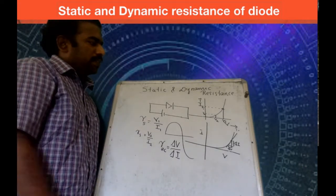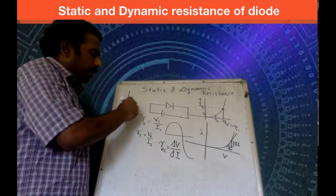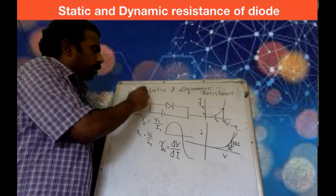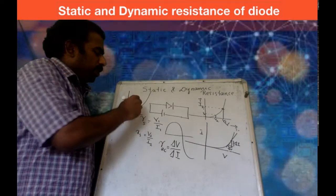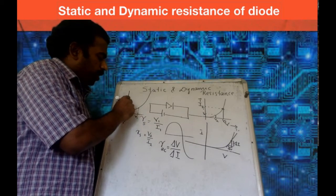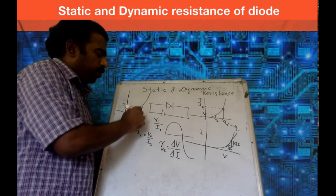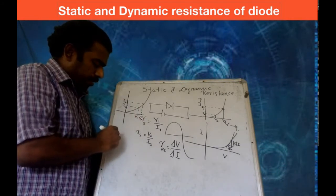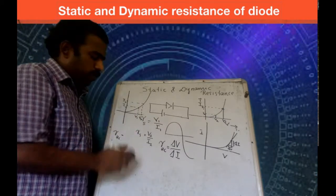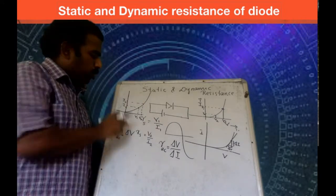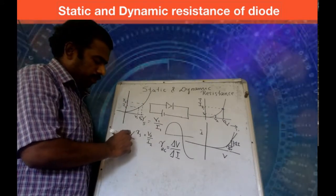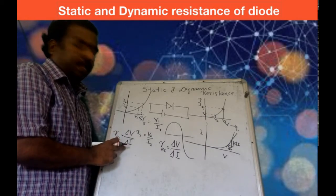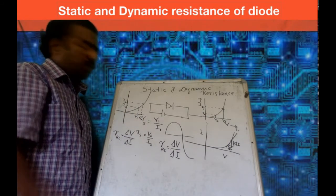To calculate AC resistance from the forward characteristic curve, take two points: V1 and I1, then V2 and I2. The change in voltage is V2 minus V1, which gives delta V. The change in current is I2 minus I1, which gives delta I. So the AC resistance R_AC equals delta V divided by delta I. In this way, you can calculate the AC resistance from the forward characteristic curve.